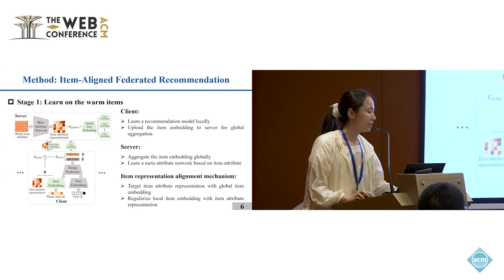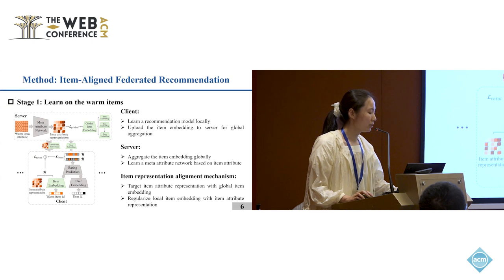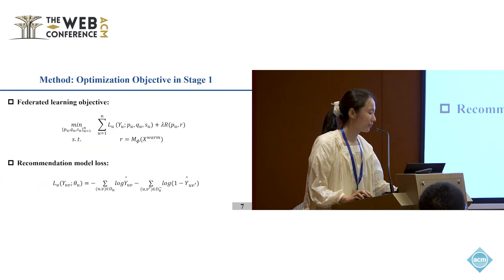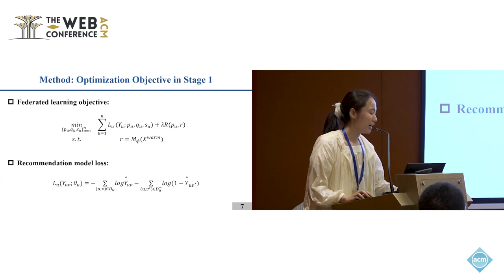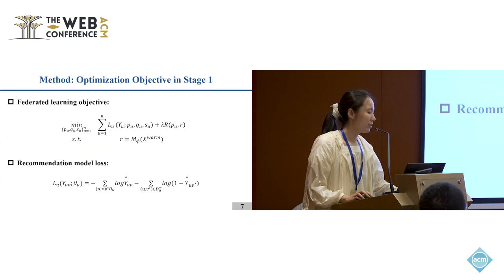For the item representation alignment mechanism, the server aligns the item attribute representations with the global item embeddings, and the client regularizes the local item embeddings with the item attribute representations. For the optimization objective in stage one, each client incorporates a regularization term in model training, and for the recommendation model loss, we adopt the common binary cross-entropy loss.